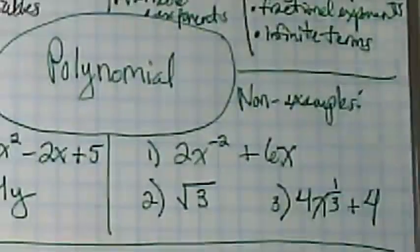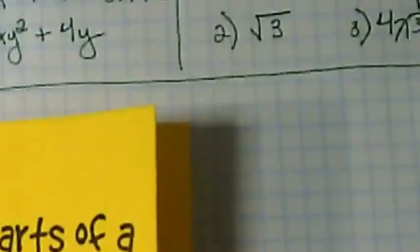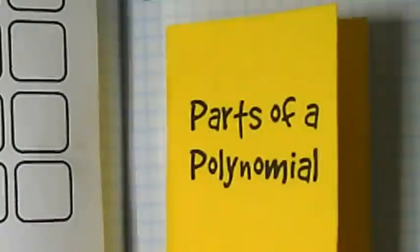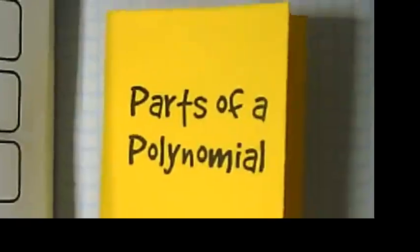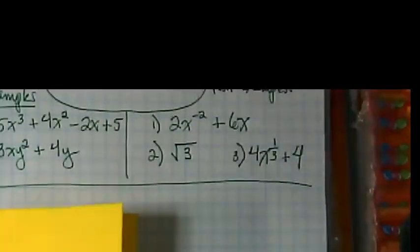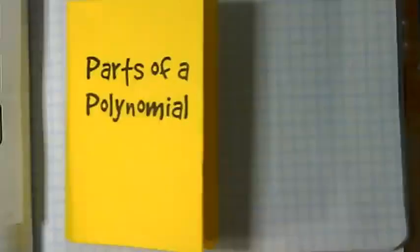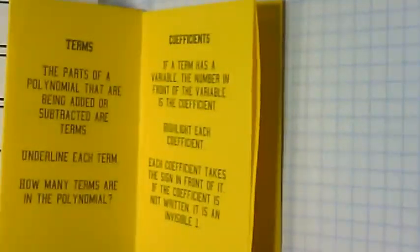We're now going to take a look through our mini booklet that we've glued in here and underline some areas around parts of a polynomial. Okay, parts of a polynomial. I'd like you to look inside your booklet.